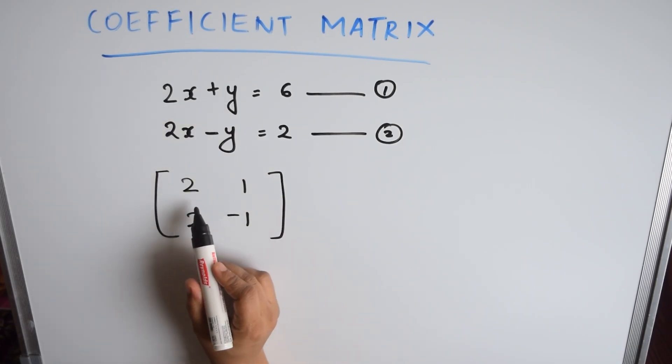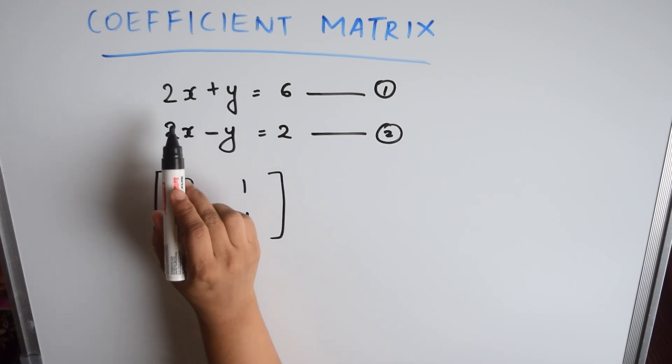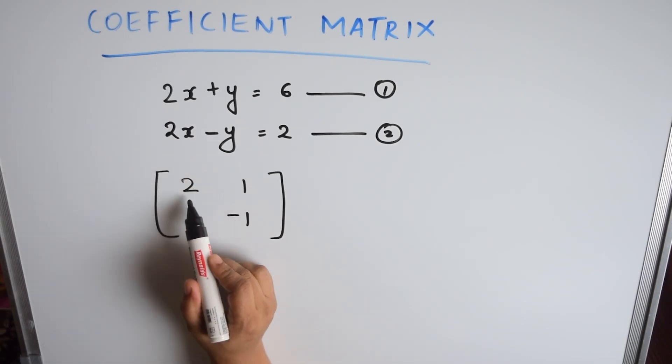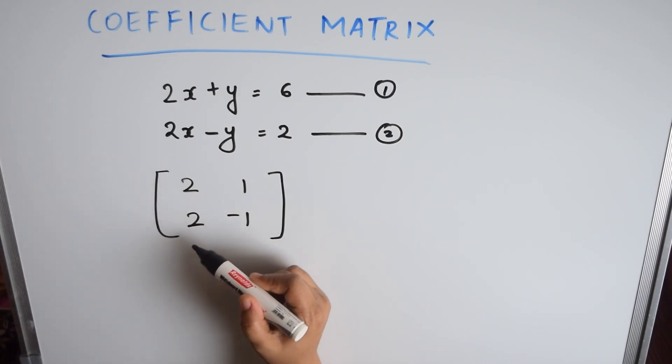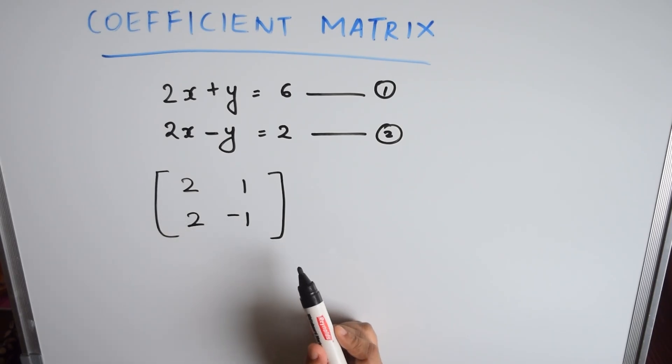From this part, we write this portion of the matrix. That is, we take this coefficient and write here and this coefficient and write here. Now, in the second row, we write this coefficient and then this coefficient 2 and minus 1.